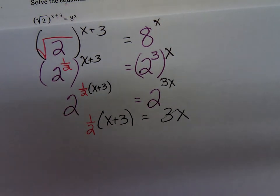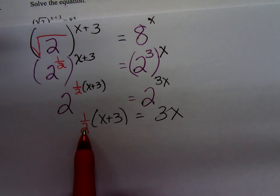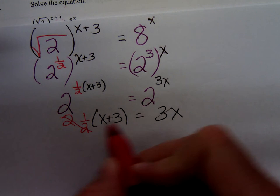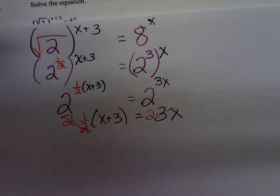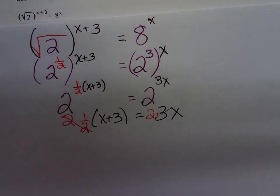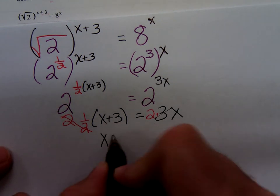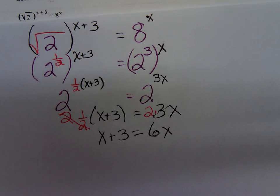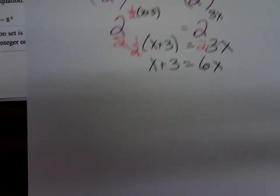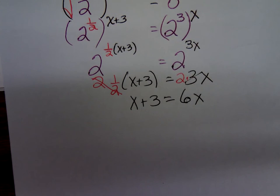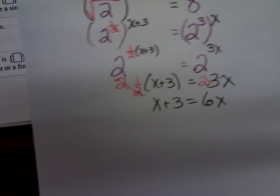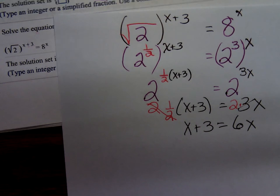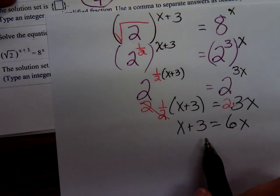Why did I not distribute the 1 half? Well, right now, you can easily get rid of this 1 half by multiplying both sides by 2. So, on the left, I just have x plus 3. And on the right, 6x. So, I'm solving x plus 3 equals 6x.